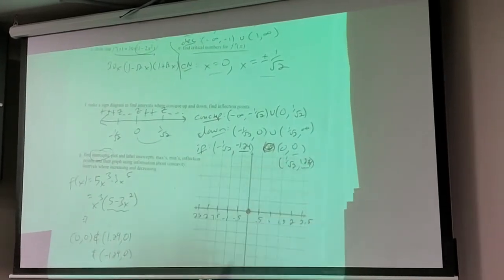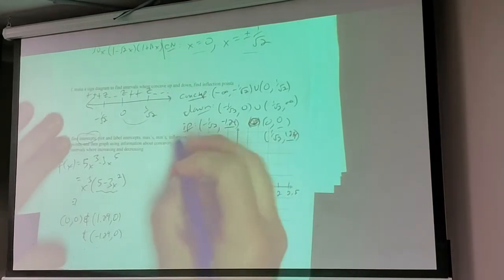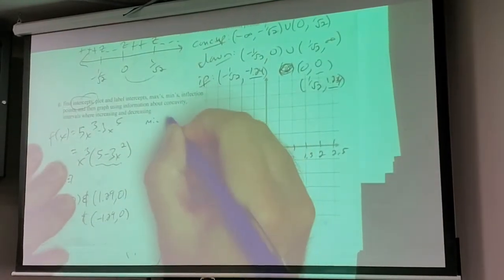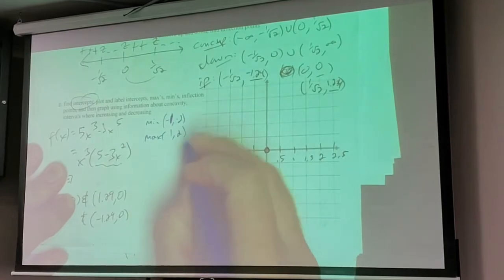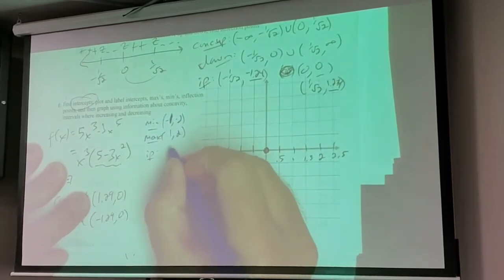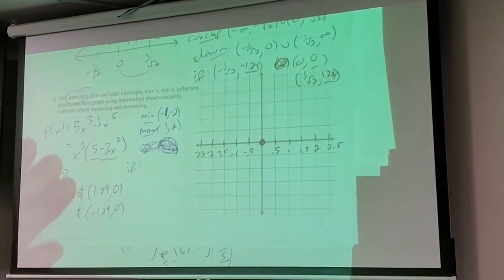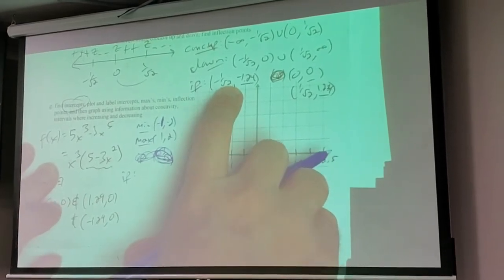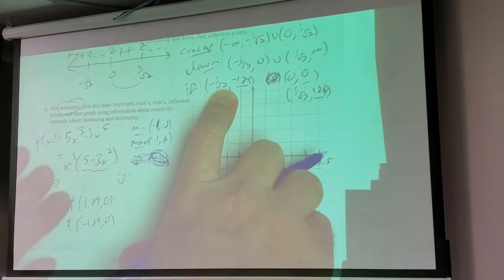Let me summarize everything we know from this problem. We know there's a min at (-1, -2), we know there's a max at (1, 2), and we know there's an inflection point at several places. Negative one over root two - let's write this better. What is one divided by root two? About 0.707.